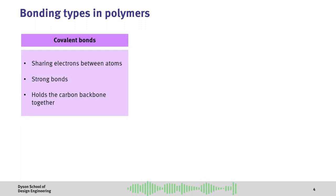The first key type of bonding is the covalent bond. This is where electrons are shared between atoms, which generally forms a very strong bond. This is what holds together the carbon backbone.